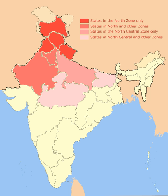Heavy to moderate snowfall occurs in Himachal Pradesh, Jammu & Kashmir and Uttarakhand. Much of North India is notorious for heavy fog during winters. Extreme temperatures among inhabited regions have ranged from −45 degrees Celsius in Dross, Jammu and Kashmir, to 50.6 degrees Celsius in Alwar, Rajasthan.